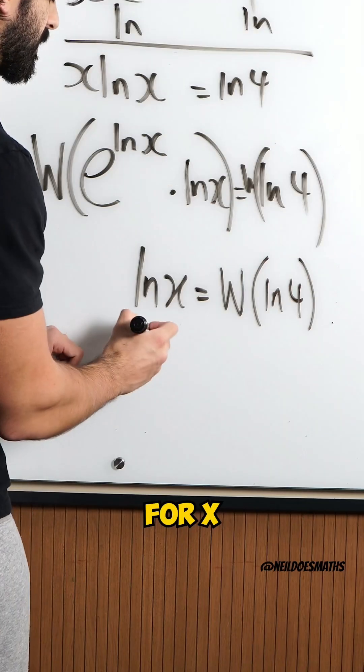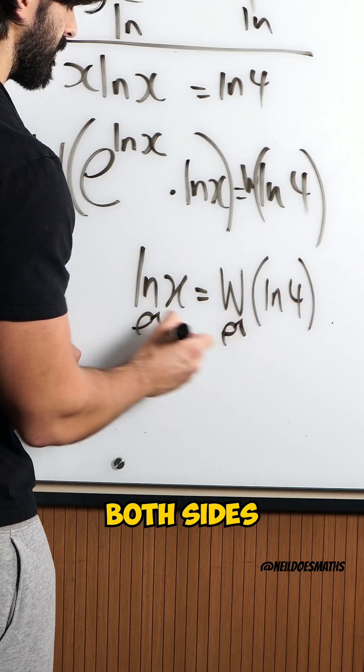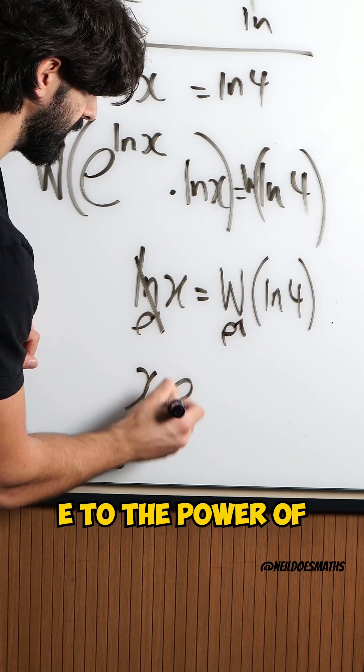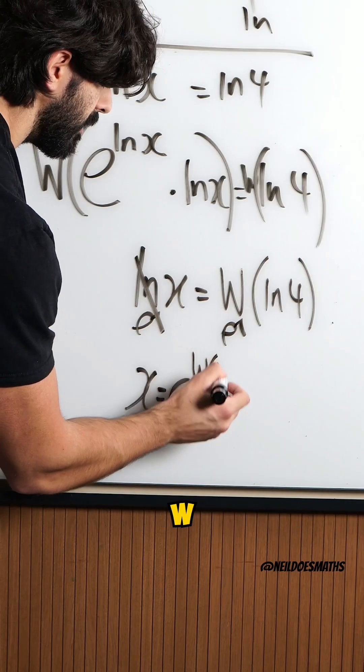Finally I'm gonna rearrange for x by doing e to the power of both sides. That will cancel this and I get x is e to the power of W, ln 4.